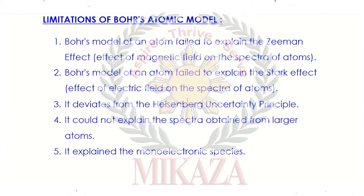The Heisenberg uncertainty principle states that at any particular moment, one cannot simultaneously determine both the momentum and position of a particle with certainty. Bohr's model could not follow this principle. Number four: it could not explain the spectrum obtained from larger atoms with bigger atomic numbers. Number five: Bohr's model only explained mono-electronic species — atoms or ions with just one electron. Only those species with one electron matched Bohr's atomic model.